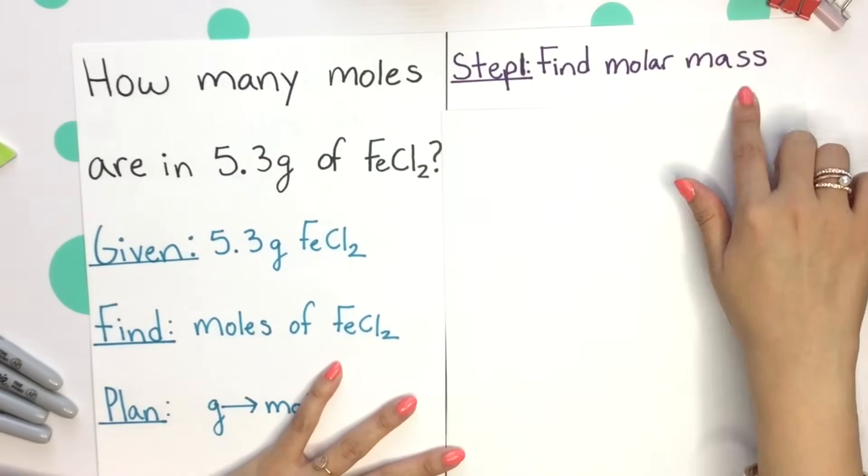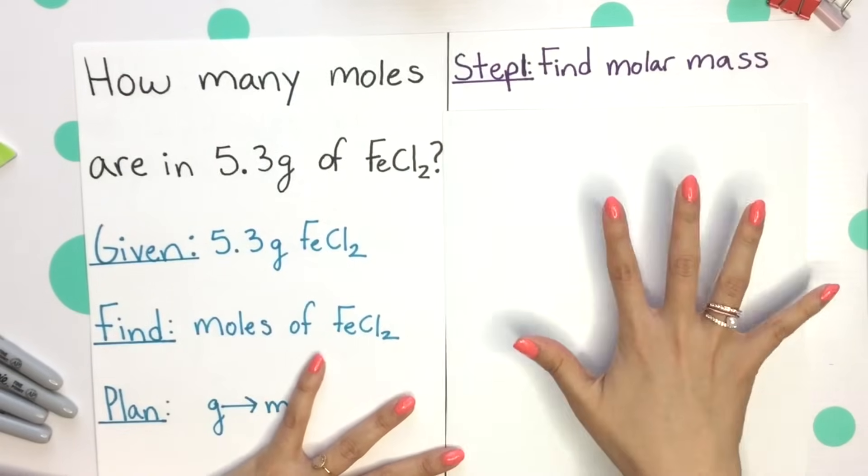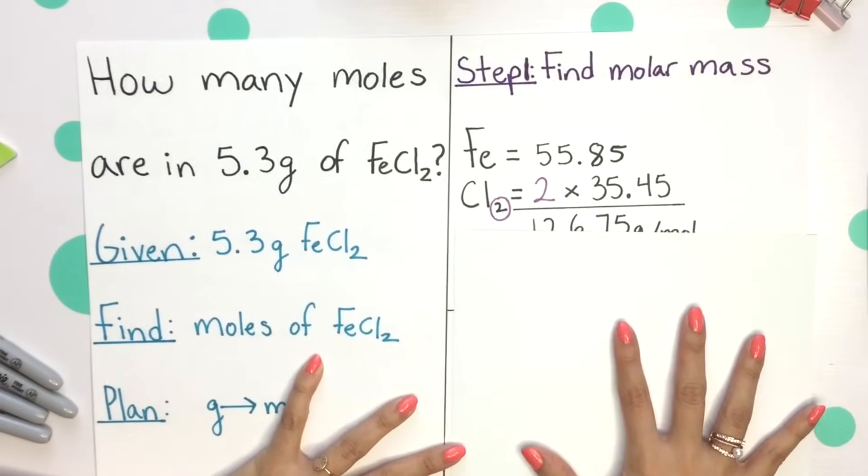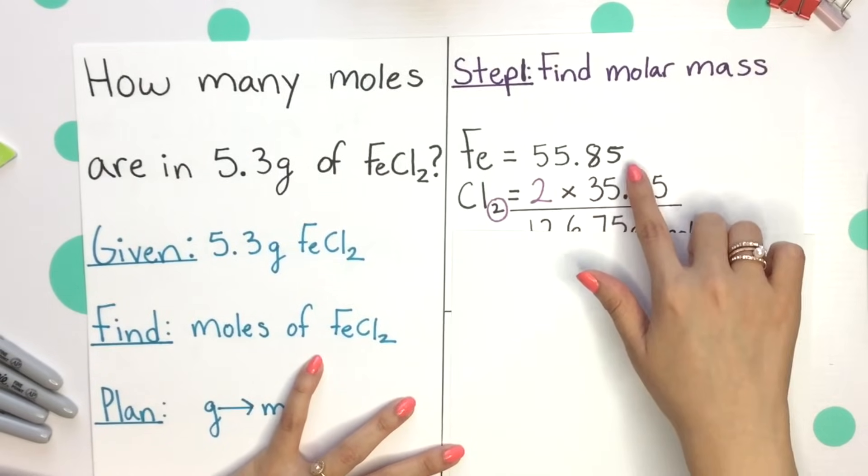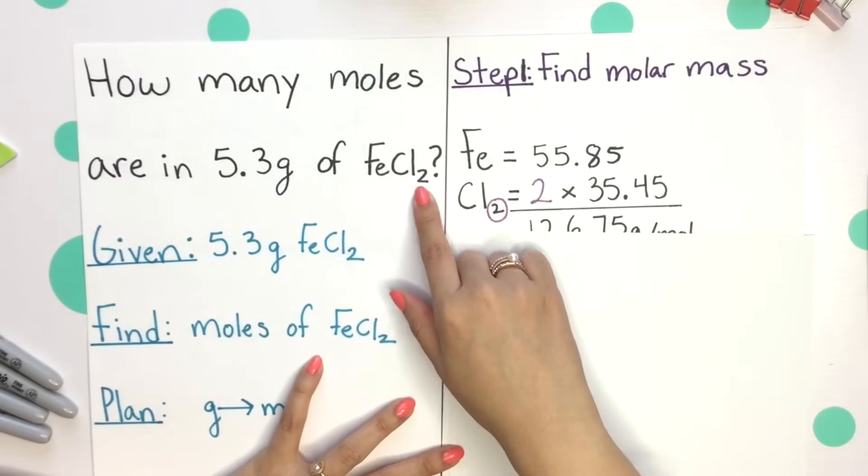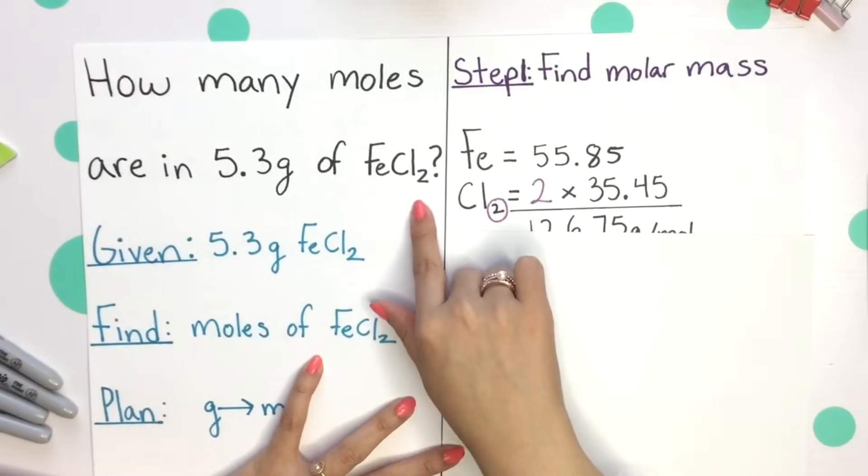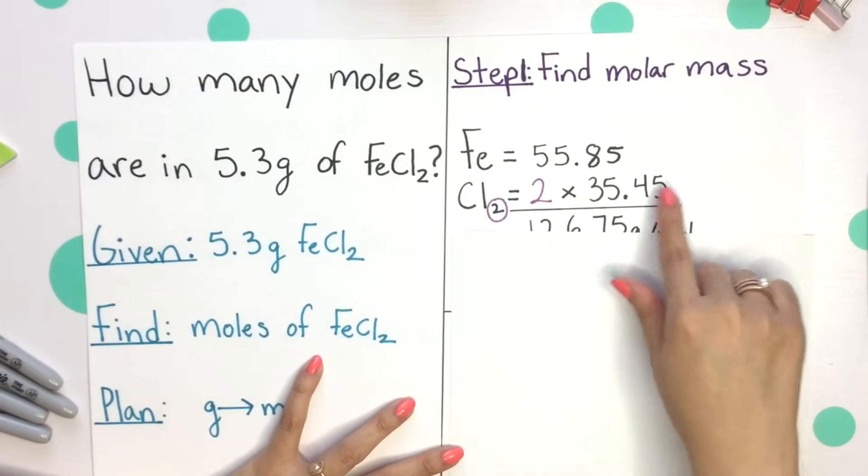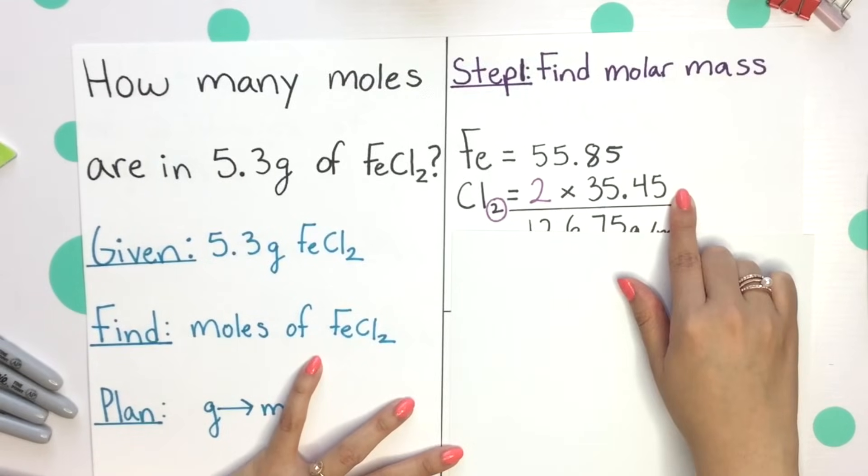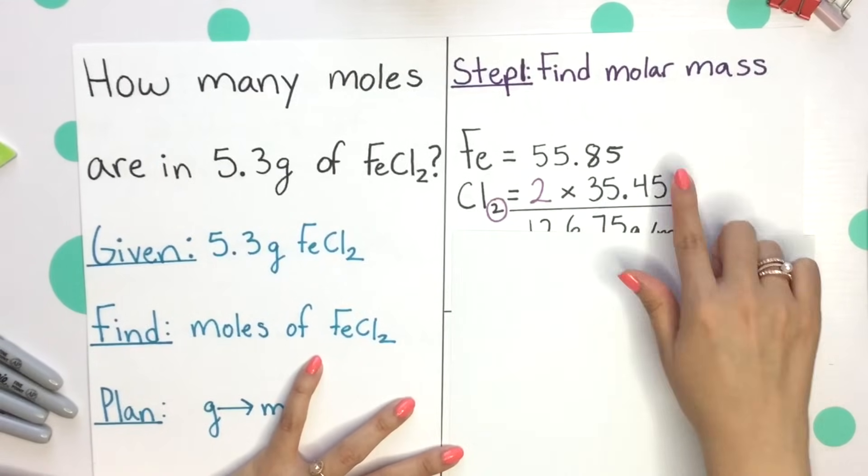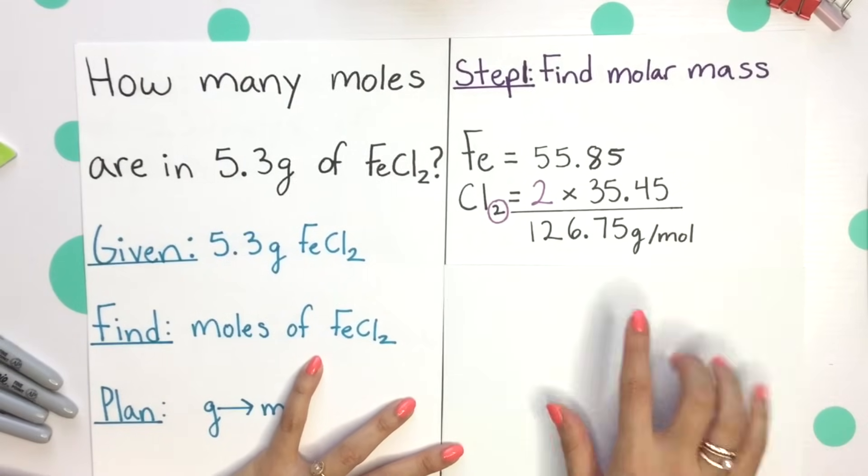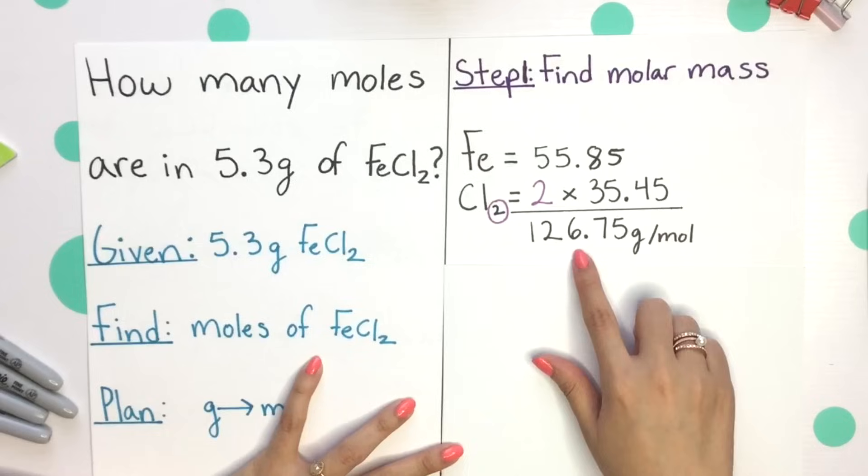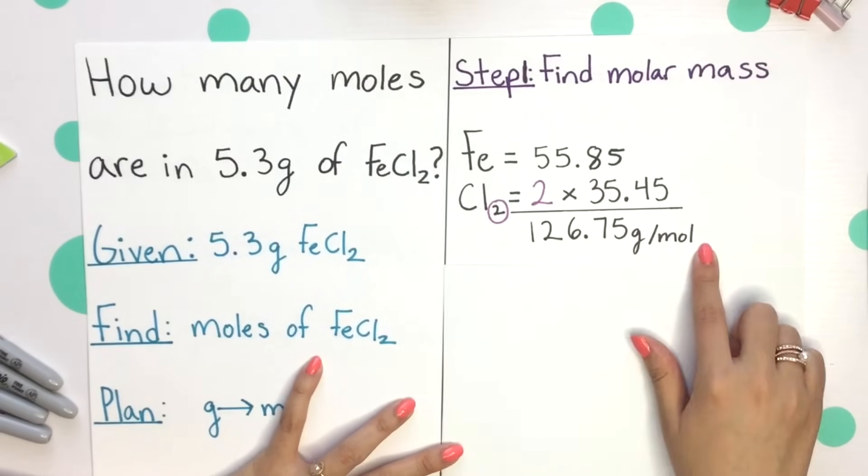Step one is to find our molar mass of iron chloride. We'll take the individual masses of iron, which is just 55.85. There are two chlorine within this entire compound, so we have to multiply by two times the one individual chlorine's molar mass. So multiplying that out and adding by 55.85, we will get a molar mass of 126.75 grams per mole.